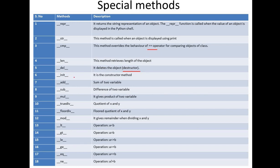The init method is a constructor method — when the object is created, this method is called automatically. Apart from these, we have special methods for arithmetic operations. We have the add method to add two variables, subtract, multiplication, and division, which returns the quotient value. We also have floor division, which gives you truncated division, and the mod operation. These are the built-in special methods available for arithmetic operations.